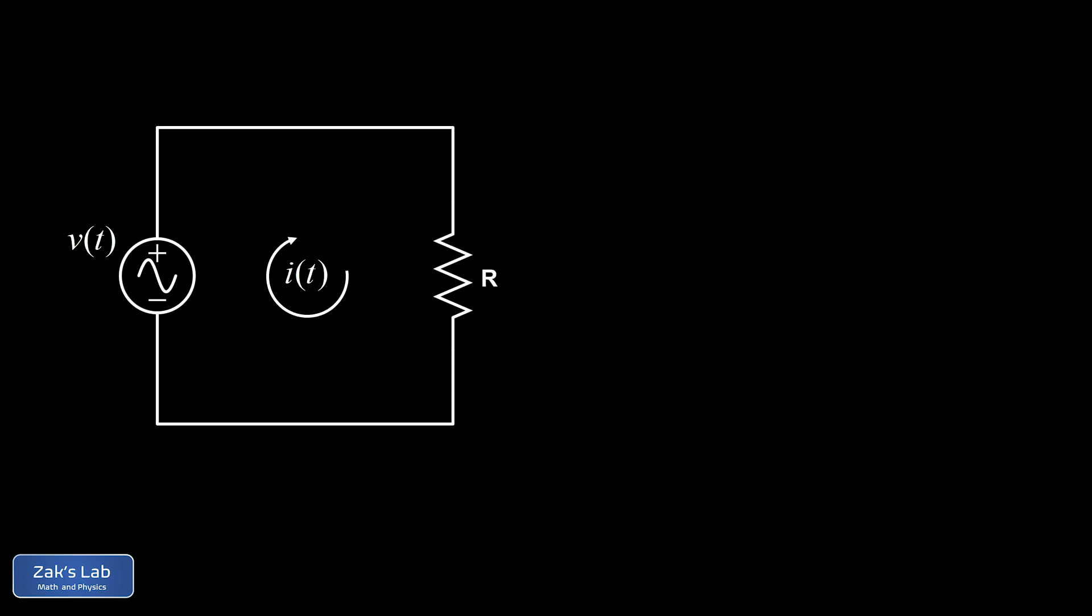All we do here is apply Kirchhoff's voltage law to this circuit. So I imagine just going on a clockwise loop and counting up all the voltage changes on a closed loop. And that just gives us little v of t, that's the voltage step up as we cross over the power source, minus little i times R, that's the drop in voltage over the resistor, is equal to zero. And of course, we quickly solve this for v of t.